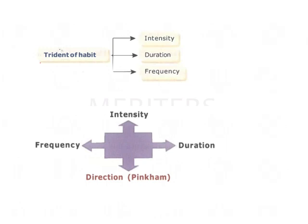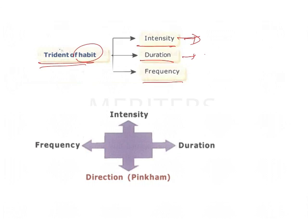Regarding Pinkham's trident of habit, he first gave a trident which said that intensity, duration, and frequency are the most important factors bringing about changes in the dentition or skeletal structures due to a habit. Intensity depends upon the vigor with which the child performs the habit, such as thumb sucking. Duration is the amount of time spent indulging in the habit — say five minutes at a time. Frequency is the number of times per day the habit is performed, so that five minutes can be repeated multiple times throughout the day.